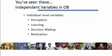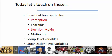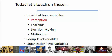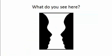At the individual level, we actually have four different variables to take into consideration. For the purposes of this short video, we'll be looking at perception and decision making. Let's start by looking at perception. When you think about perception, you'll often think about images such as this.